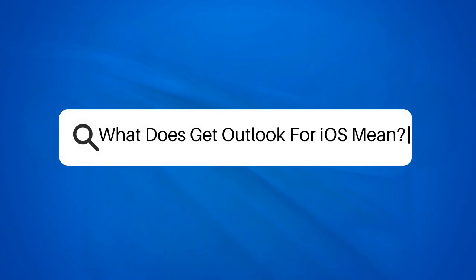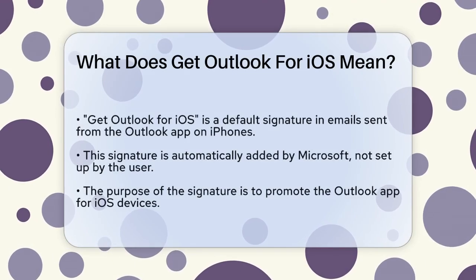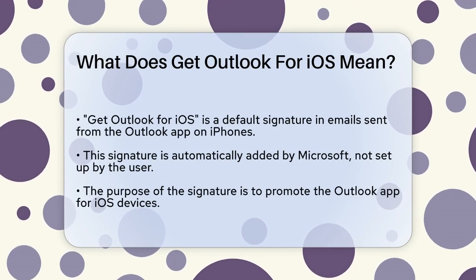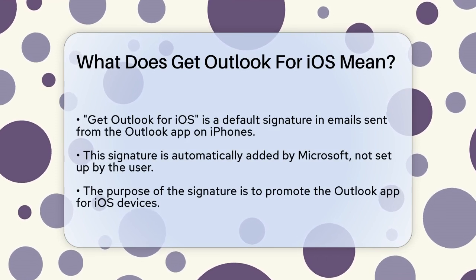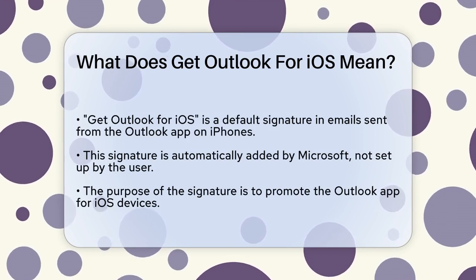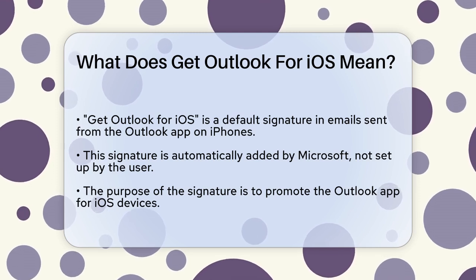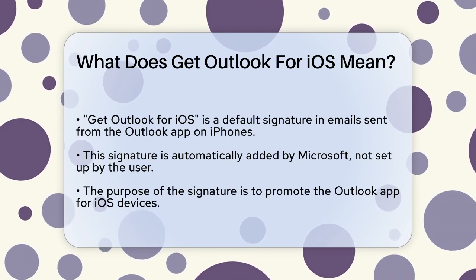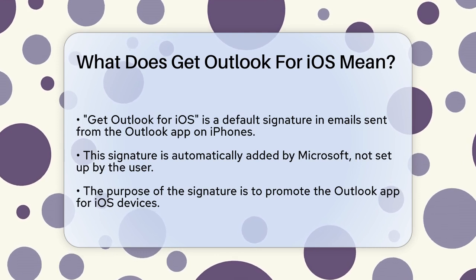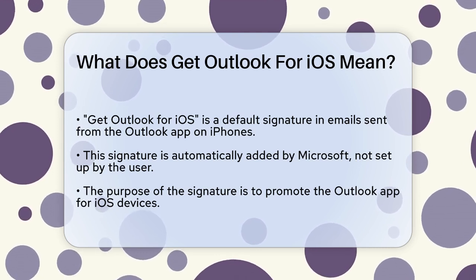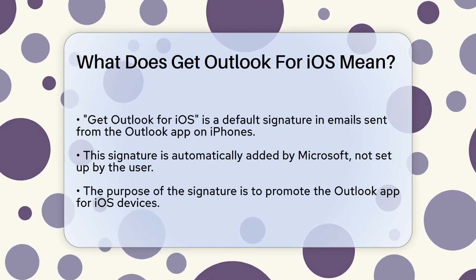What does 'Get Outlook for iOS' mean? If you've been using the Microsoft Outlook app on your iPhone and noticed a default signature at the end of your emails that says 'Get Outlook for iOS,' you might be wondering what this is all about. Let's break it down. When you use the Outlook app on your iOS device, it automatically adds this signature to your emails. This signature is not something you've set up yourself, but rather a default setting by Microsoft.